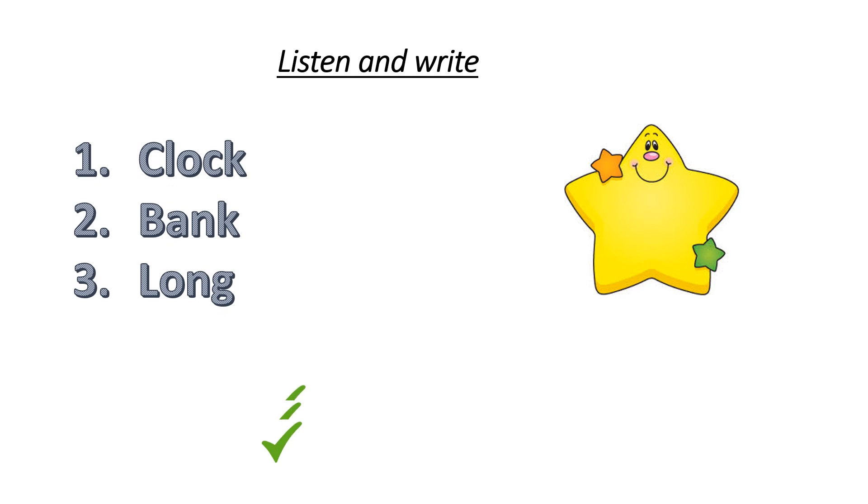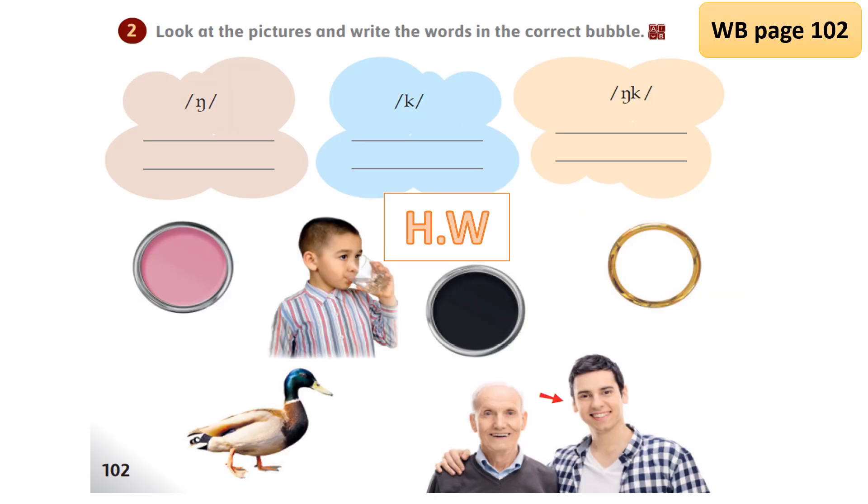How many of them did you get right? Good job. Now time for homework. You are going to do your homework on page 102, exercise number two in your workbook. Look at the pictures and write the words. What are these colors? Look at the boy. Look at this bird, what is it? And this man is very old, but the next to him is young. And what's the circular thing that we wear on our fingers? Thank you very much, shall we meet the next video.